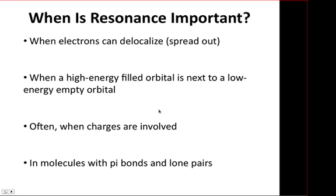As an example of this, going back to the enolate example, the electrons on the negatively charged oxygen are very high in energy. They want to get away from the other negatively charged electrons. And the pi star is a relatively low-energy empty orbital.